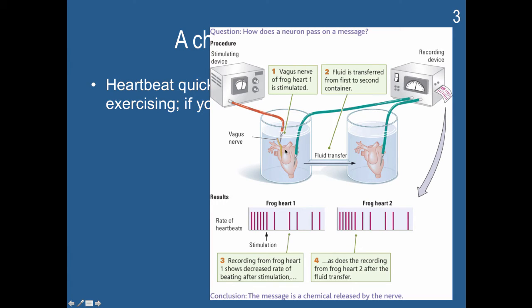When they stimulated the first heart to beat slower, it slowed down. The amazing thing that happened is that the second heart, even though it wasn't directly stimulated, started to slow down too. This experiment indicated that some chemical was being released that traveled through the fluid — which mimics extracellular fluid — and then influenced the neurons in the second heart muscle. The conclusion was that a chemical message is released by the nerve to be received by other nerves.